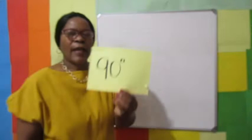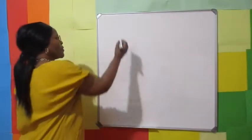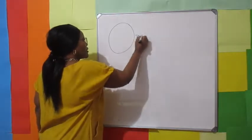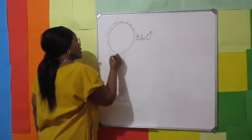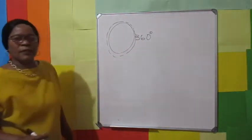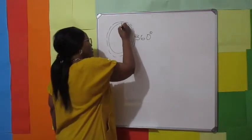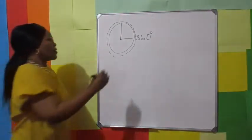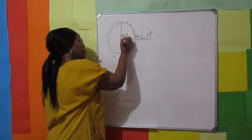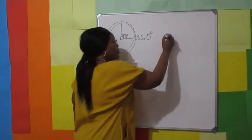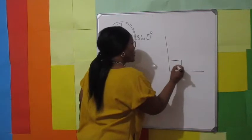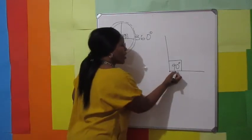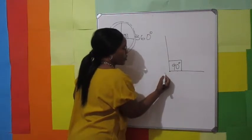Let's look at 90 degrees. Our circle is 360 degrees — the distance from this side all the way around to this point is 360 degrees. Looking at these two rays, this is 90 degrees. This is the common point where these two rays meet, and it is called the vertex.